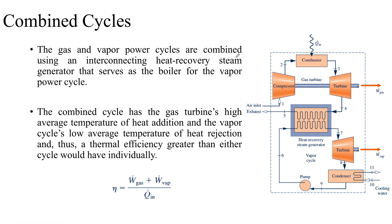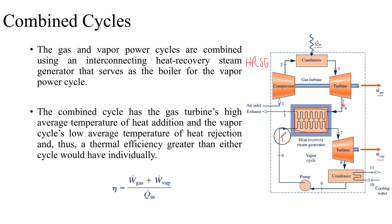The heat recovery steam generator, also termed HRSG, operates between the two cycles. For the combined cycle efficiency, we account for the net work done across the gas cycle plus the net work done across the vapor cycle, divided by the heat content being supplied—which is only across the combustion chamber. No heat needs to be supplied to the boiler anymore, because the turbine exhaust leaving at state 4 is already at a higher temperature and heats up the working fluid leaving the pump for the vapor cycle.